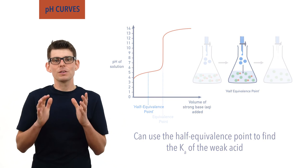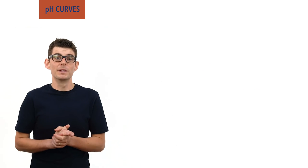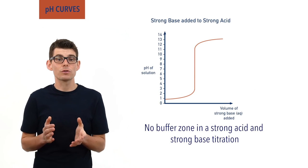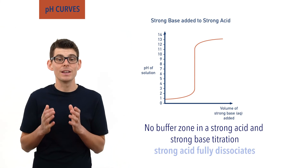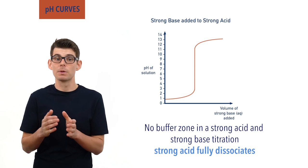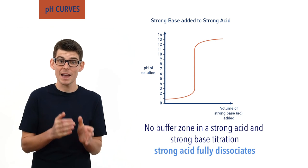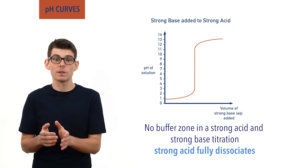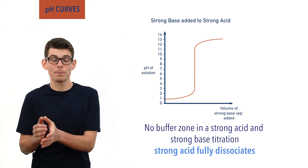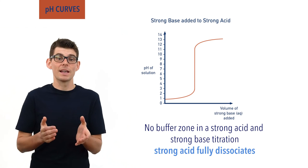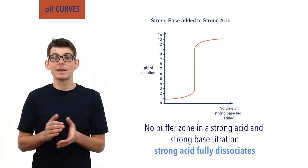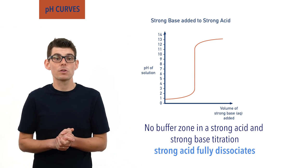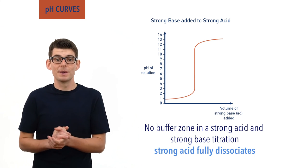There is no buffer zone in a strong acid and strong base titration, as the strong acid fully dissociates, and no equilibrium system between acid, H⁺ ions and conjugate base ions gets established, meaning no ability to minimize a change in pH.